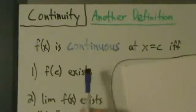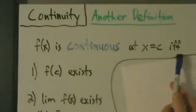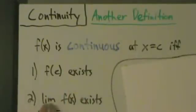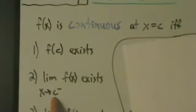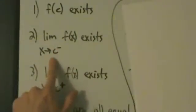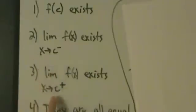So f of x is continuous at x equals c if and only if: first, f of c has to exist; second, the limit as x approaches c from the left of f of x exists; third, the limit as x approaches c from the right of f of x exists; and fourth, they're all equal. In other words, the function value, the left-hand limit, and the right-hand limit at x equals c all have to equal the same thing.